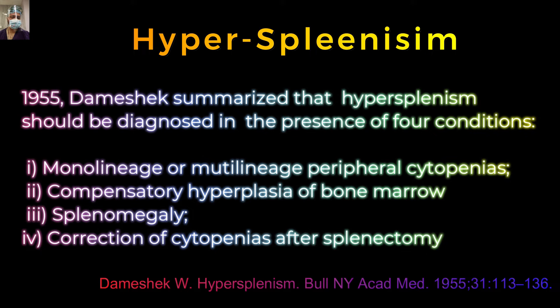In hypersplenism, the spleen is enlarged and overactive, leading to over-destruction of blood cells — RBCs causing anemia, platelets causing thrombocytopenia, or rarely WBCs. Most commonly you will find thrombocytopenia, followed by anemia, then leukopenia. The bone marrow should be normal and hyperactive due to compensatory hyperplasia. All four criteria cannot always be met since correction requires surgery; you will see two or three criteria in most patients.